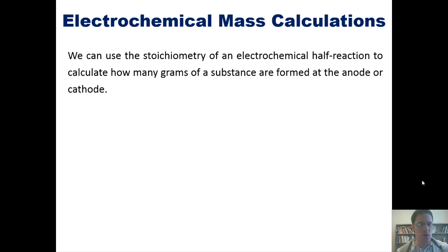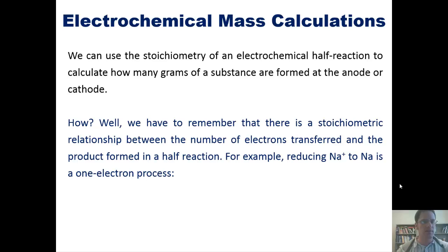We can use the stoichiometry of an electrochemical half-reaction to calculate how many grams of a substance are formed at either the anode or the cathode. How, you may ask? Well, we have to remember that there is a stoichiometric relationship between the number of electrons transferred and the product formed in any half-reaction.